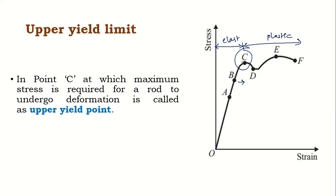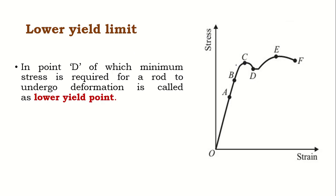Point C is the upper yielding point — the point at which the metal starts undergoing permanent deformation. Next is the lower yielding point, D. At D, even for a minimum or smaller load the body undergoes permanent deformation. At the upper yielding point C, maximum stress is required to initiate permanent deformation, but at D, minimum stress is sufficient. After C the material has already started deforming, so even a small load will cause further permanent deformation — its elasticity is gone. C is the upper yielding point and D is the lower yielding point.